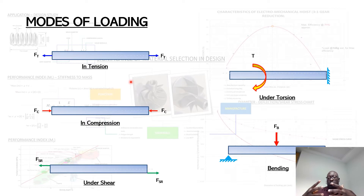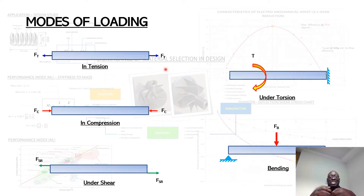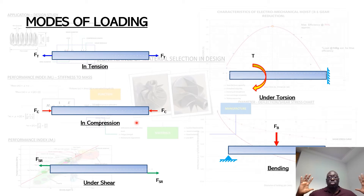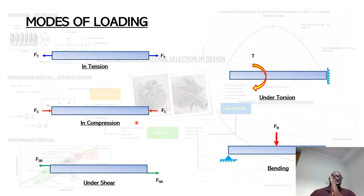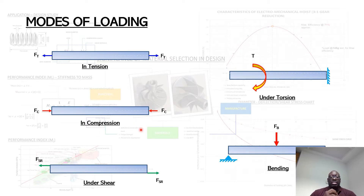We could have a component being subjected to some form of pulling force which will cause it to elongate. So this is where we term that component being in tension — a tensile force. We've also got a situation whereby some amount of force or pressure is causing a component to decrease in length, while there's also that possibility of lateral elongation. So we call that material being in a state of compression.